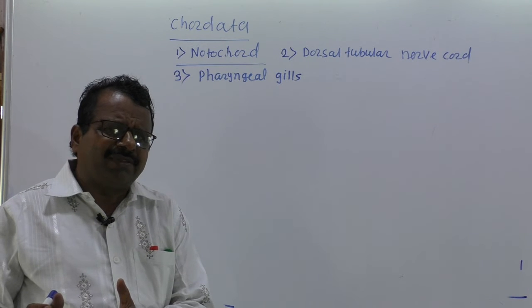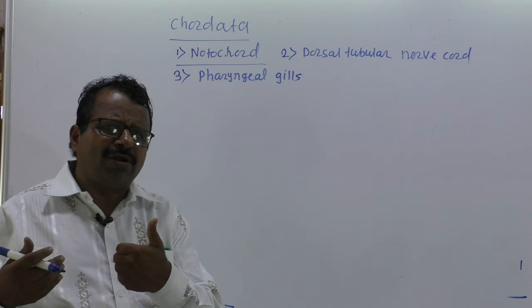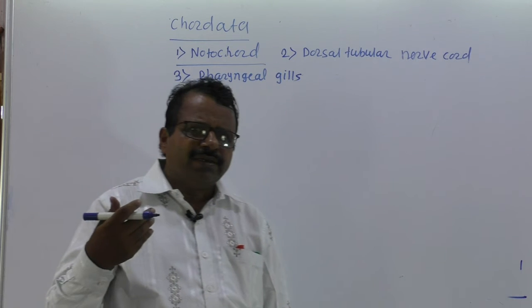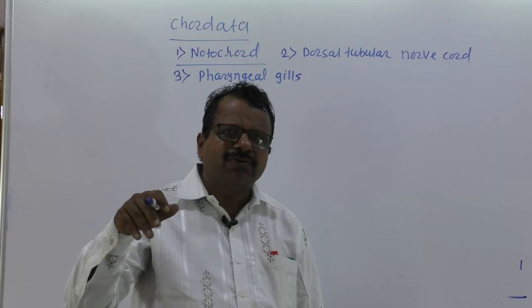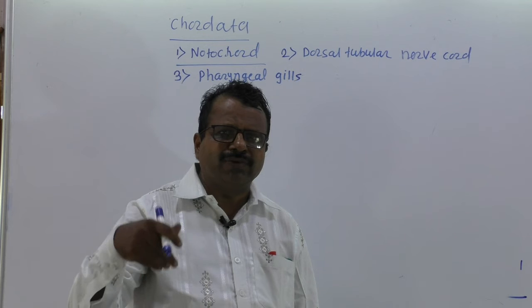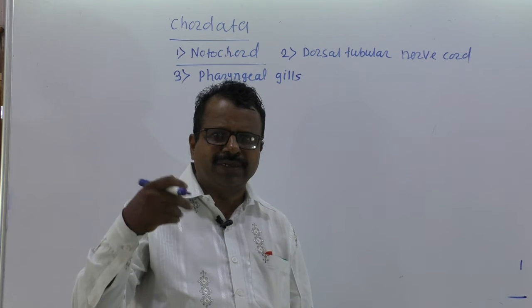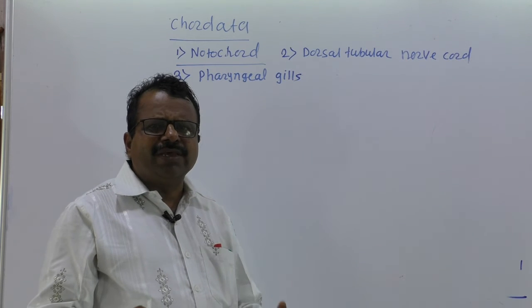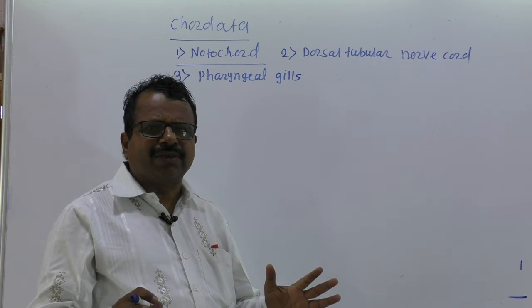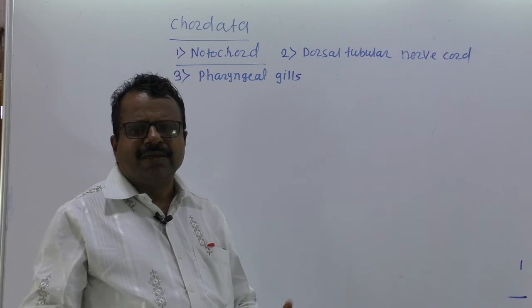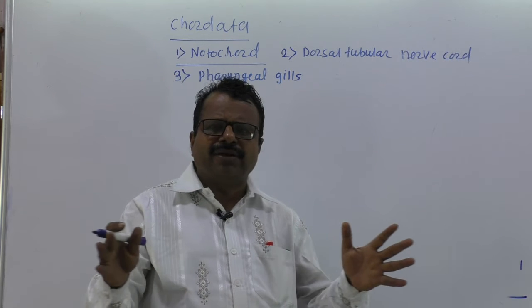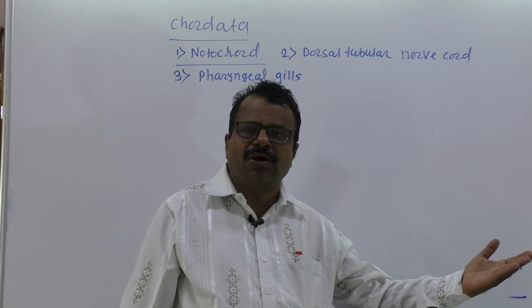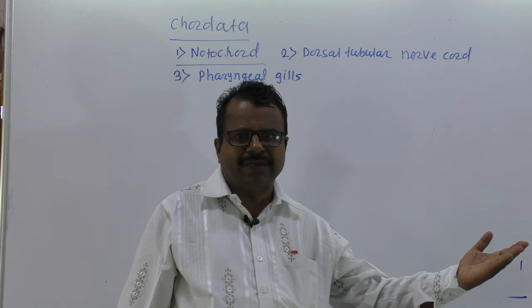For the process of excretion, many different organs have been formed in different groups. Some throw waste out by direct diffusion, some have flame cells, some have Malpighian tubules, some have green organs, some have Bowman's organs, some have nephridia. They have developed a special organ - the kidney.